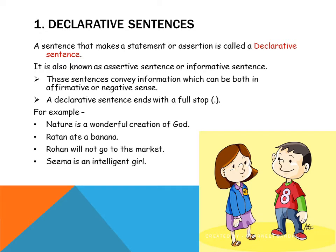Nature is a wonderful creation of God. Ratan ate a banana. Rohan will not go to the market. Seema is an intelligent girl. In all these sentences you can see some or the other information is being shared. So these sentences are called declarative sentences.